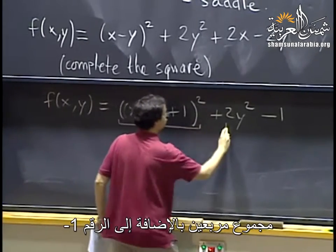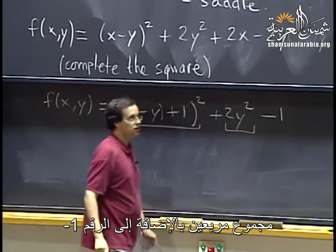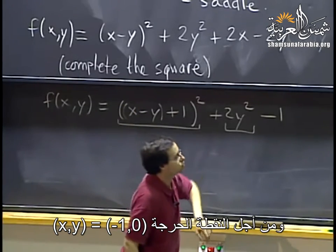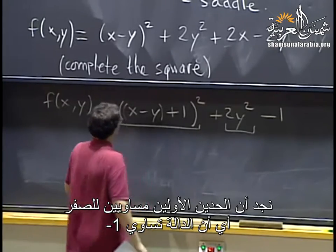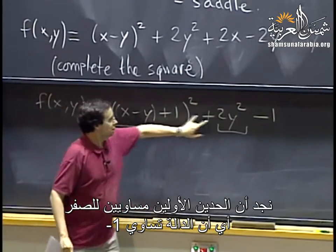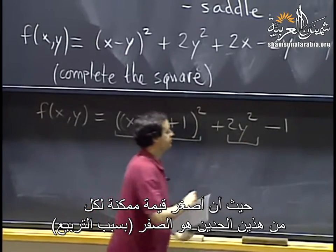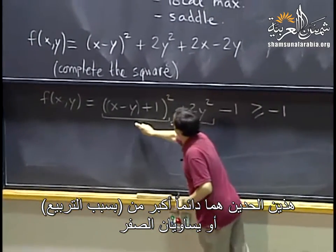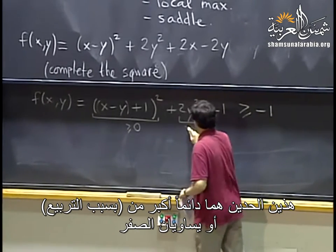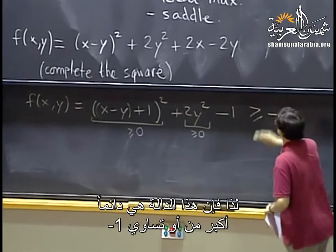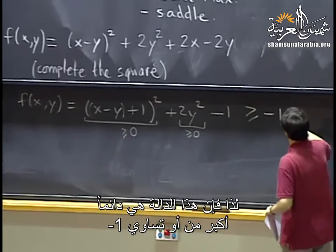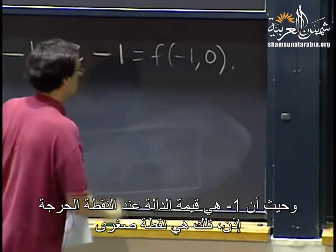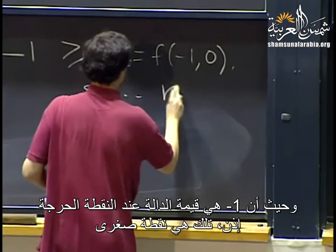This is a sum of two squares minus 1. At the critical point (x, y) = (−1, 0), both squares are zero. Since each square is always non-negative, the function is always at least minus 1, and minus 1 is achieved at the critical point. So it's a minimum.